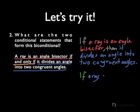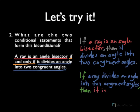So that should read, If a ray divides an angle into two congruent angles, then it is an angle bisector. The two conditional statements that form a biconditional are a conditional and its converse.